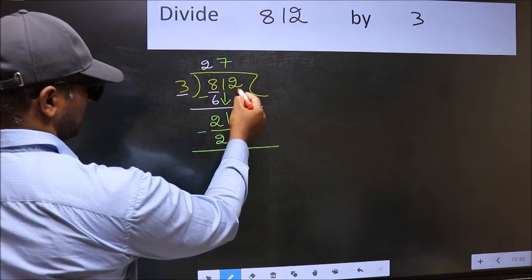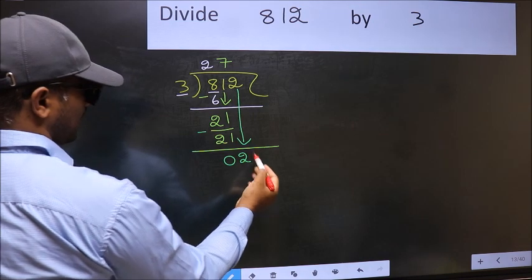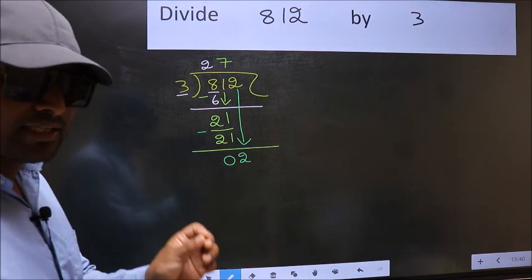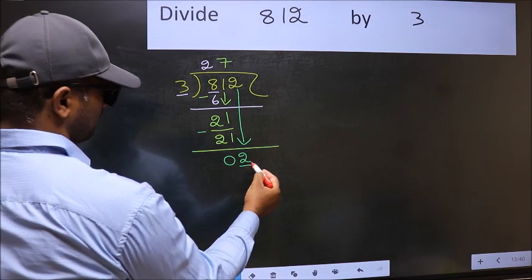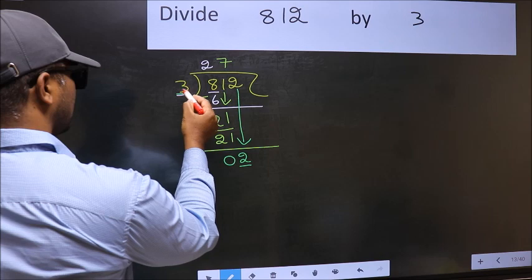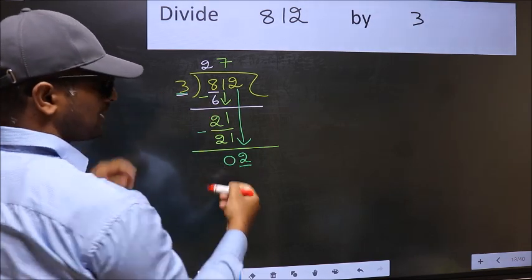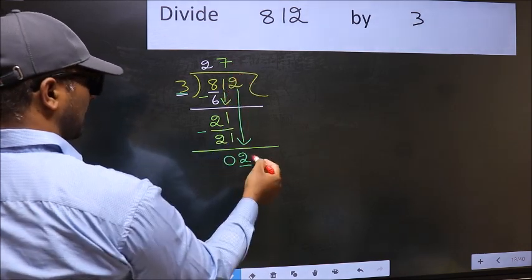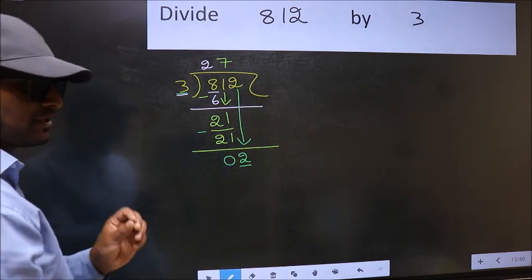After this, bring down the beside number. So 2 down. After this step, the mistake happens. And the mistake is this. Here we have 2 and here 3. 2 is smaller than 3. So what many do is they directly put a dot and take 0 which is wrong.